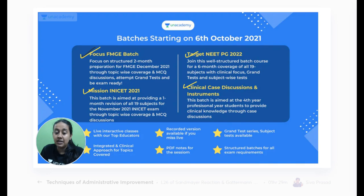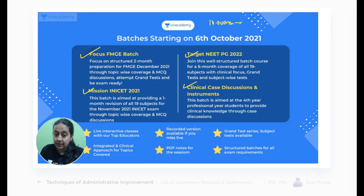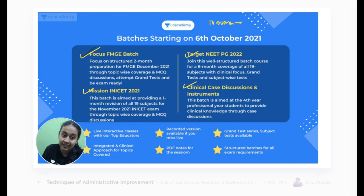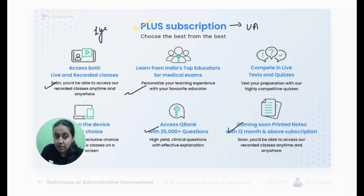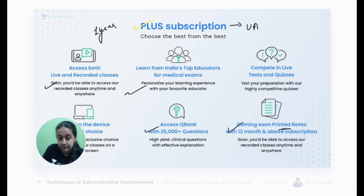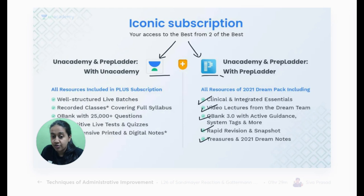I request all students to please be part of any of these batches. I'll be taking dermatology starting from tomorrow, 10 AM to 2:30 PM — daily four-hour classes till the 10th. We have two types of subscriptions: Plus and Iconic. Plus gives access to Unacademy live classes from top educators, a question bank, and with a one-year subscription you get printed notes. Iconic gives a combination of Unacademy and PrepLadder, including clinical integrated essentials, video lectures, question bank, rapid revision snapshots, and treasure notes. You also get Unacademy notes in Iconic.